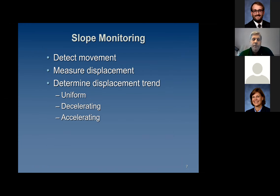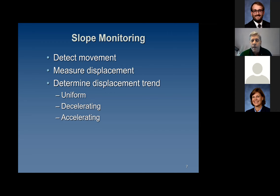Why is slope monitoring done? Number one is to detect movement and try to define the failure area. Number two, measure the displacement. And number three, use that displacement trend to make a prediction of how the slope is performing. The displacement trend can be uniform, decelerating, or accelerating. We'll see some examples on some charts coming up.